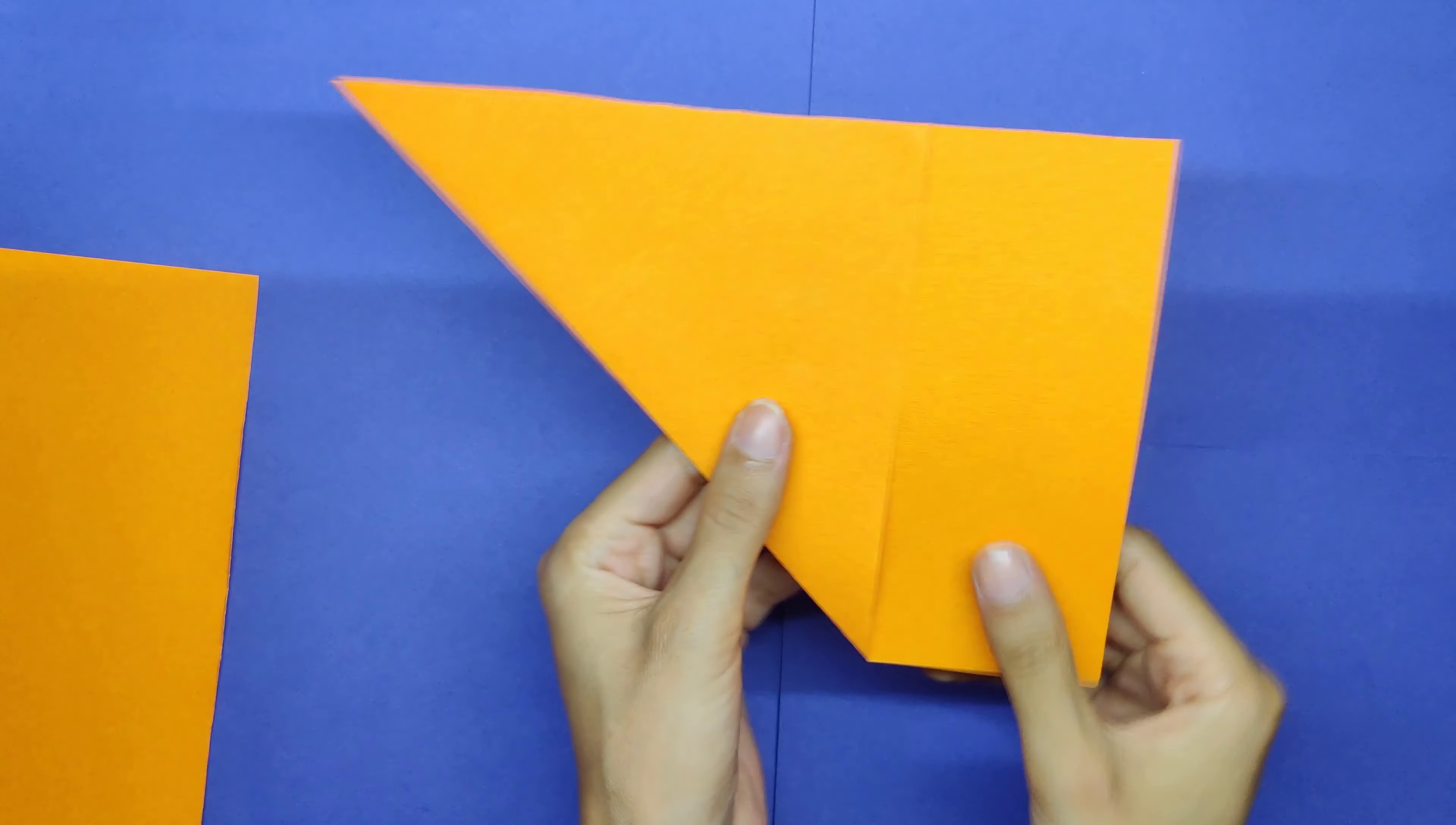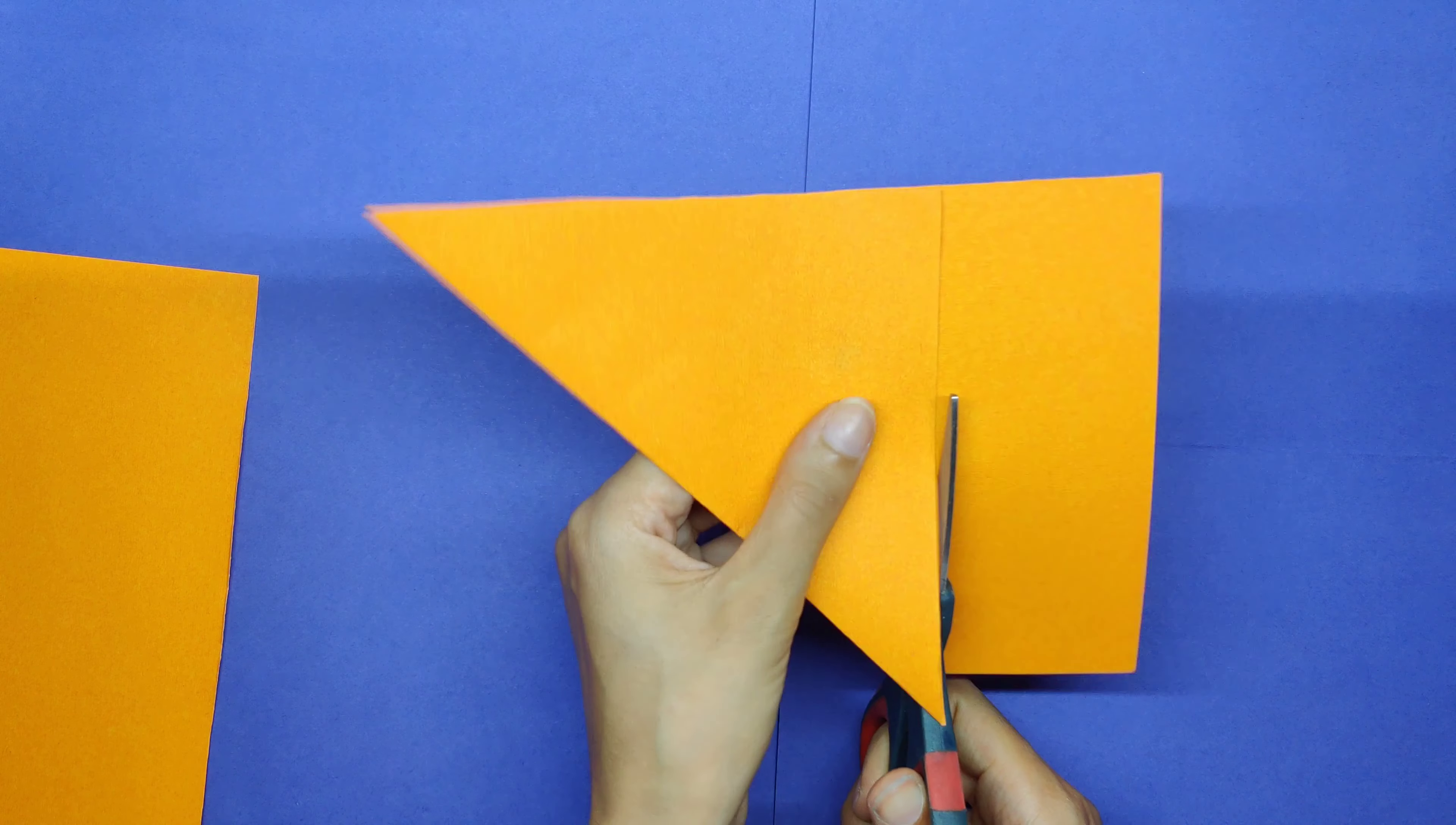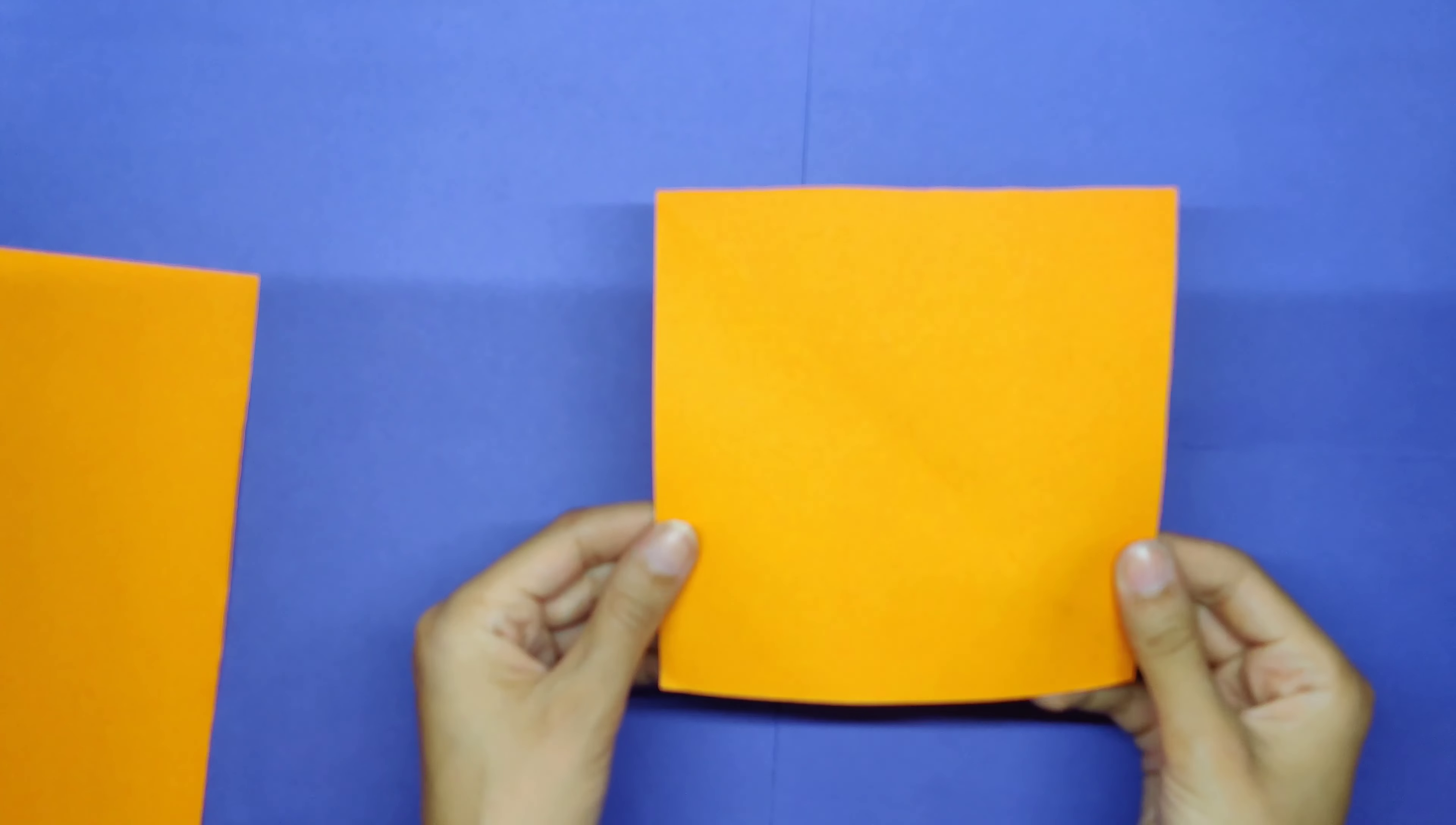Now flip the paper, sorry, turn the paper and so you can hold this part here and follow the line again and cut the rectangle that is left on the side. We don't need it. Ta-da! Voila! You have a square, a beautiful square.